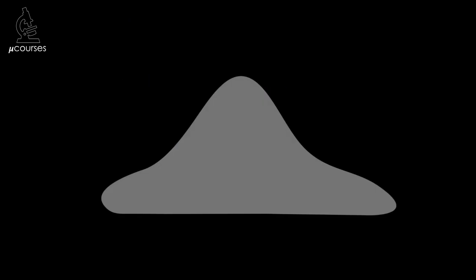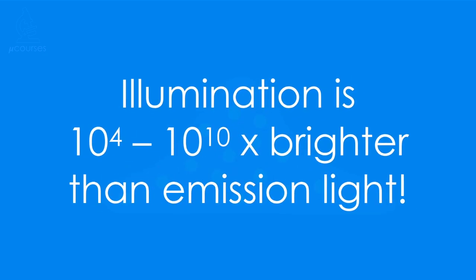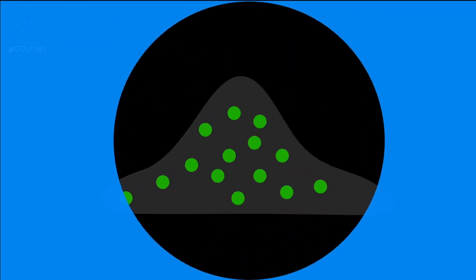Let's say we want to image a cell to which we've added a fluorophore. We illuminate the sample with the wavelengths of light that excite the fluorophore. The intensity of the illumination light is much higher than the intensity of the emitted light from the fluorophore, so the excitation light would completely drown out the relatively small amounts of emission light. We need a filter that blocks the excitation light while allowing the emission light to pass through. This filter is referred to as the emission filter, also known as a barrier filter.